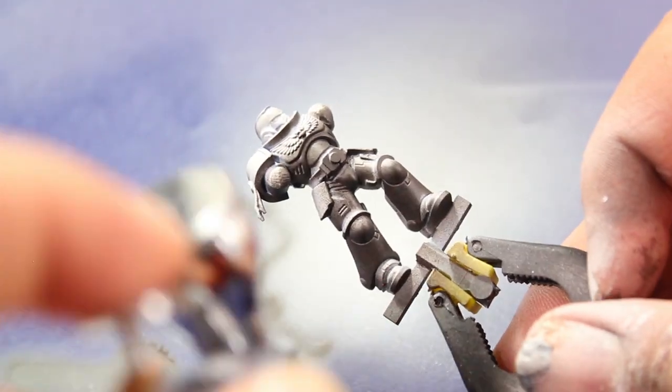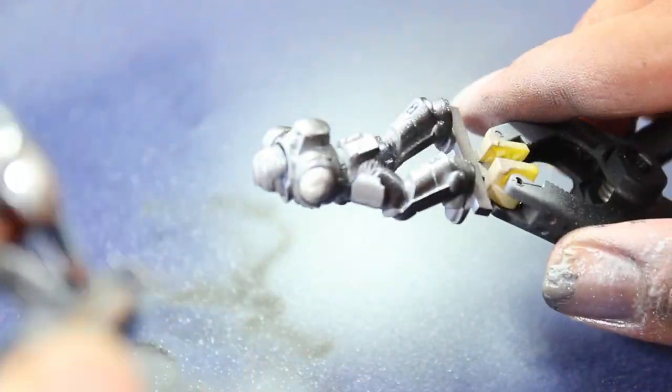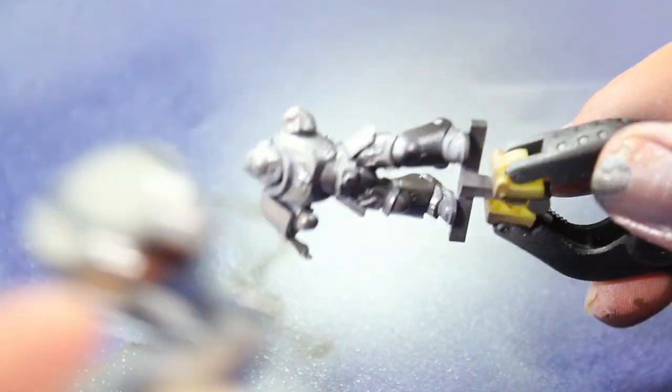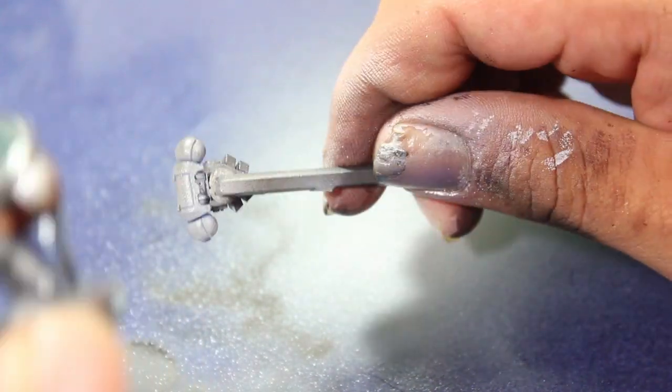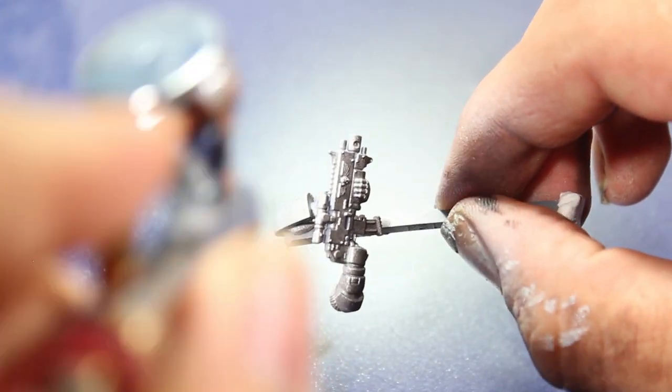Once that was done, I used a Vallejo Silver, and I gave the whole model a base coat of this. I made sure to go a little bit heavier in the lightest areas of the model, and to go a little bit lighter on the darkest areas, because I want to keep my pre-shading mostly intact throughout this process.